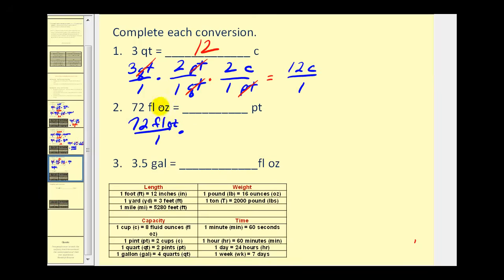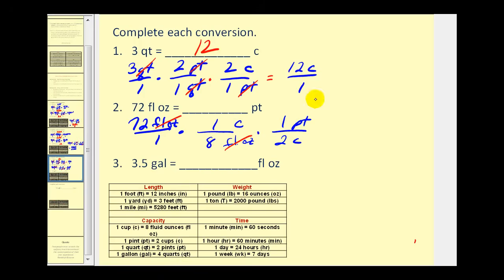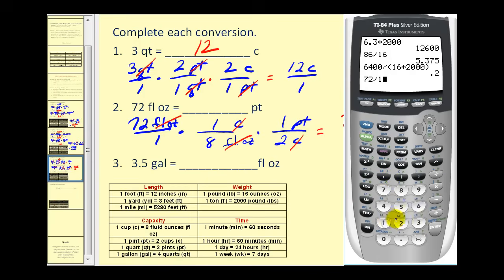On number two, to convert seventy-two fluid ounces to pints, we only have a conversion from fluid ounces to cups, so we do that first. We don't want fluid ounces in our answer, so we convert to cups: eight fluid ounces to one cup. Now the fluid ounces are gone, so we convert cups to pints. The conversion is one pint to two cups, so two cups in the denominator and one pint in the numerator. The cups are gone, so we multiply across the top: seventy-two pints divided by sixteen. Seventy-two divided by sixteen equals four point five pints.